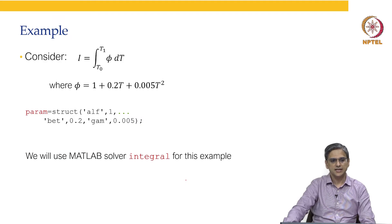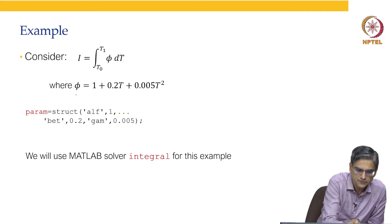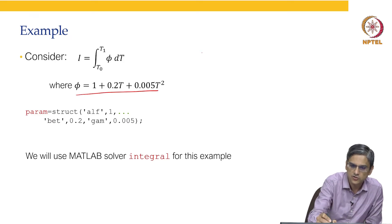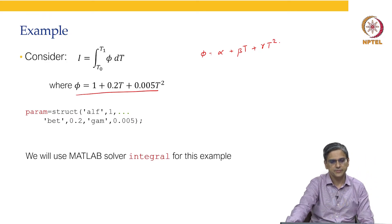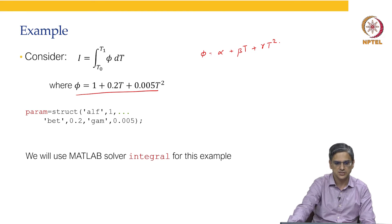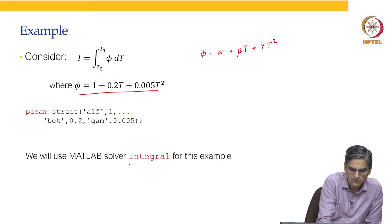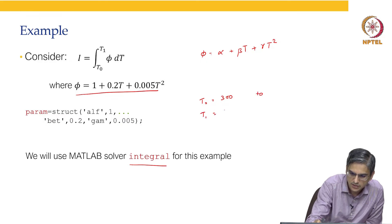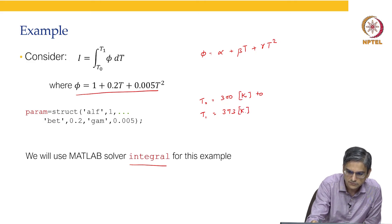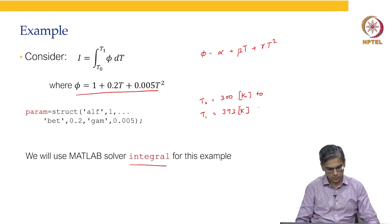Let us take an example. Consider a function phi = alpha + beta*t + gamma*t², where alpha = 1, beta = 0.2, and gamma = 0.005. We will use the MATLAB solver called integral to integrate this function between T0 = 300 and T1 = 373 Kelvins.